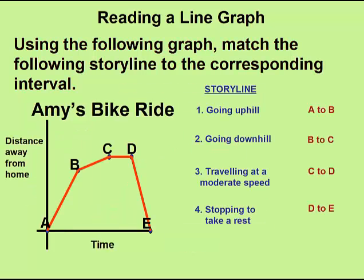We know at some point Amy was going uphill, she was going downhill, she was traveling at moderate speed, and she was stopping to take a rest. On this line graph, where would she be stopping to take a rest? That means time would be going by without traveling any further distance away from home. That would be represented by this portion CD as a flat line.